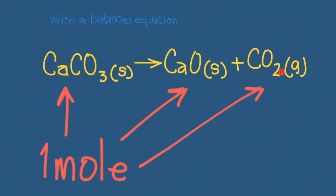The first thing you must do is to write the balanced equation. Here you can see that the balanced equation shows that one mole of calcium carbonate generates one mole of calcium oxide and one mole of carbon dioxide.